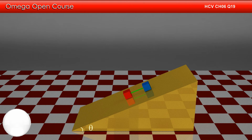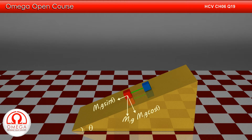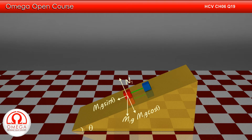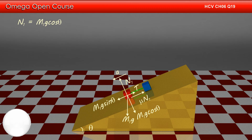Let us now draw the free body diagram of the lower block. Gravitational force M1g acts in the vertically downward direction. The component of gravity along the incline is M1g sin theta and perpendicular to the incline is M1g cos theta. Normal contact force from the incline, N1, acts perpendicular to the incline. Tension in the rod T is pulling the block up along the incline, and kinetic friction of magnitude mu·N1 is also acting up along the incline. The block is moving down the incline with acceleration a. Balancing the forces perpendicular to the incline, we get N1 = M1g cos theta.